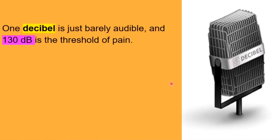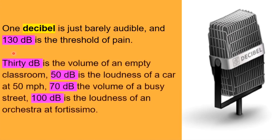That business of loudness is measured in decibels. So amplitude and decibels go hand in hand. So you might have seen this word decibel before or heard things like 130 dB, which incidentally is a threshold of pain. 30 decibels is the volume of an empty classroom. 50 dB is the loudness of a car at 50 miles per hour. 70 dB, the volume of a busy street. And 100 decibels, the loudness of an orchestra at fortissimo.